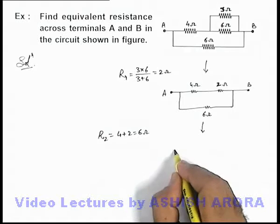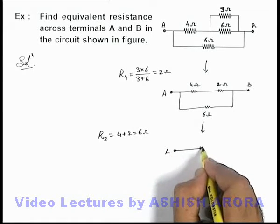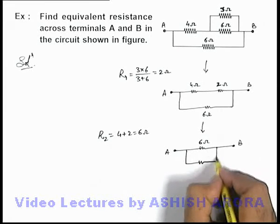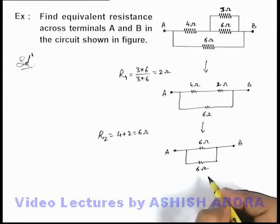So it can be further now reduced as a 6 ohm resistance and another 6 ohm resistance connected in parallel combination.